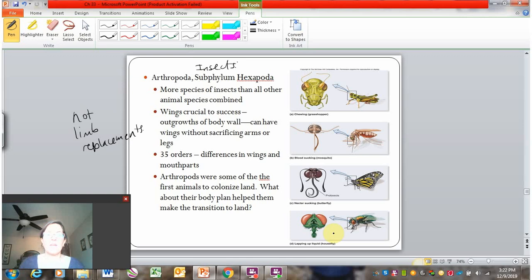Arthropods were some of the first animals to colonize land. So they probably arrived on land shortly after the plants before a lot of other things. So their body plan helped them make the transition to land because again, it's so adaptable. The segments, the ability to have wings and limbs, the specialization of limbs has helped them conquer all of the different types of biomes they encountered once they reached land.